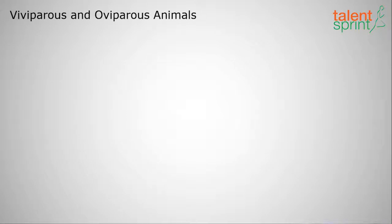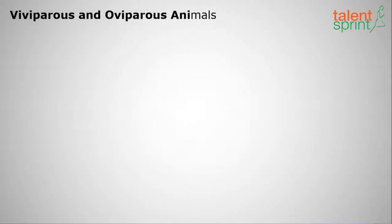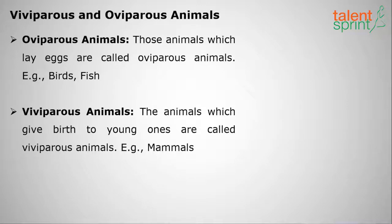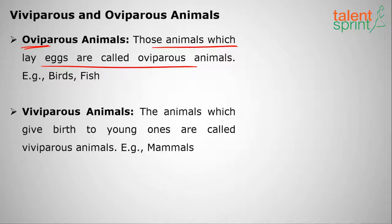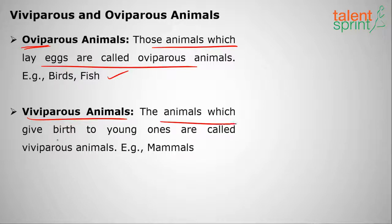First we shall deal with animals from a broader perspective. We shall see the difference between viviparous and oviparous animals. As the name says, 'ovi' means egg — so oviparous animals are those which lay eggs, like birds and fish.